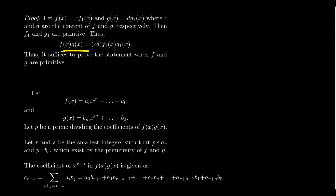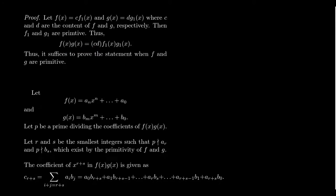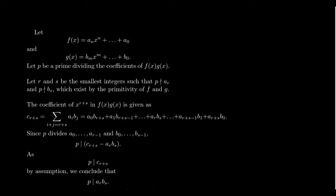When you look at the product f times g, this equals cd times f_1 times g_1. Since f_1 and g_1 are both primitive, it suffices to prove Gauss's Lemma in the setting where the product of primitive polynomials is primitive. If that statement holds, the content of f_1·g_1 is 1, and multiplying by cd gives content equal to cd, which is the product of the contents of f and g.